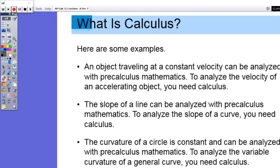Here's some examples. An object traveling at a constant velocity can be analyzed with precalculus mathematics. So for instance, if you're leaving Bristol and you're traveling to Knoxville, you can figure out your average rate of change, your average speed, by knowing when you left, when you got there, the distance between. It's very easy for us to calculate.